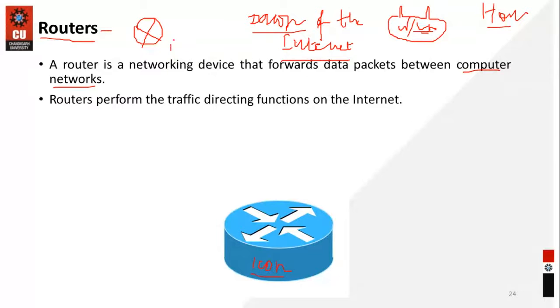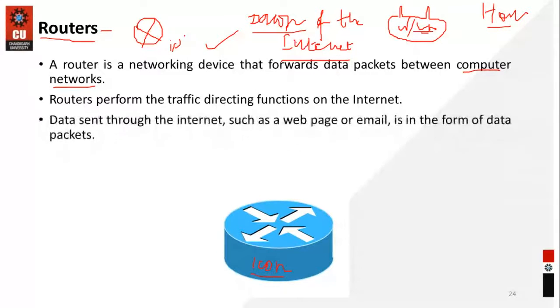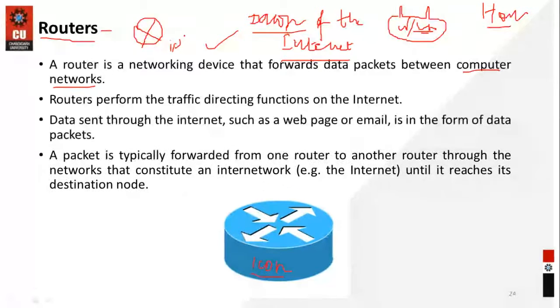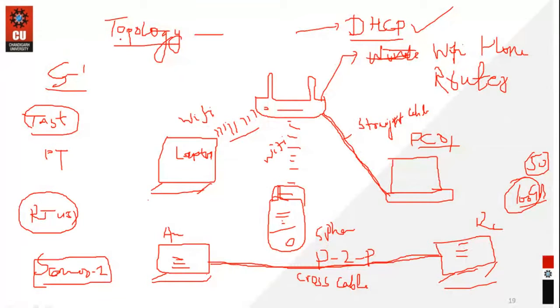The router can allow some IP addresses and maintains a routing table. Data sent through the internet, such as web pages or email, is in the form of data packets. A packet is typically forwarded from one router to another through the network that constitutes the internetwork, or simply internet, until it reaches its destination. This is the icon I have already shown you. We will be providing IP addresses and configuring this router. This is the scenario topology.